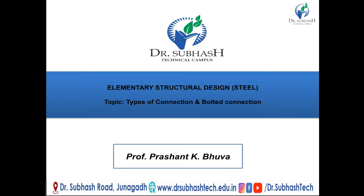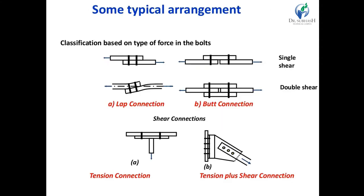Starting with some typical arrangement of connection. We classify based on the types of force in a bolt. The first one is lap joint and the second one is butt joint. In the lap joint, there are two types: single bolted lap joint and double bolted lap joint.